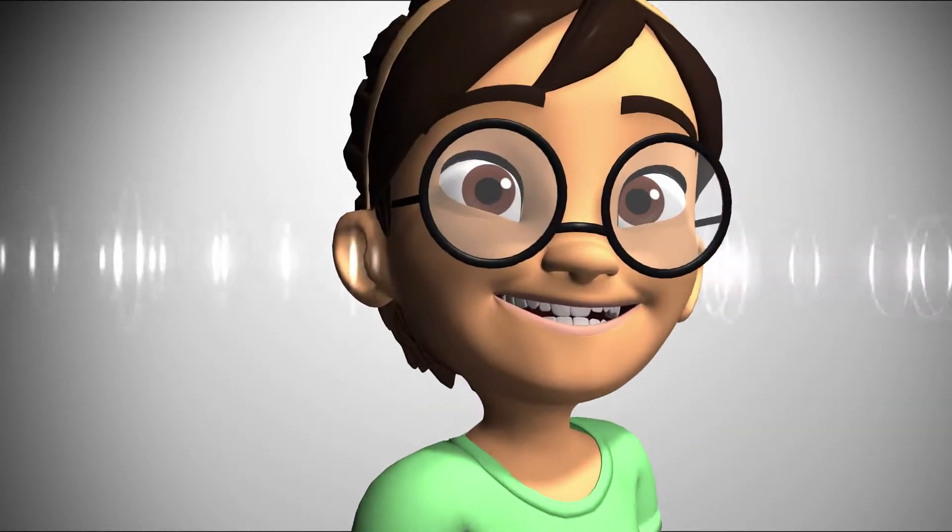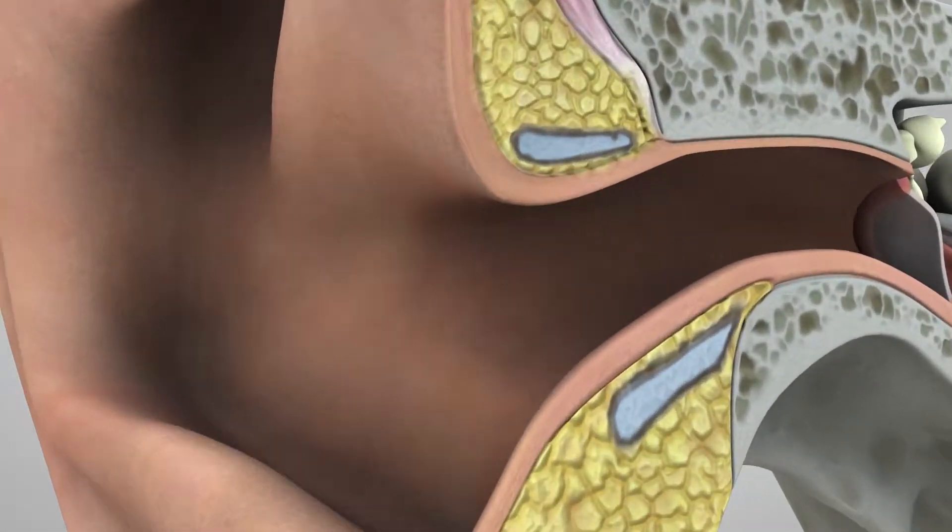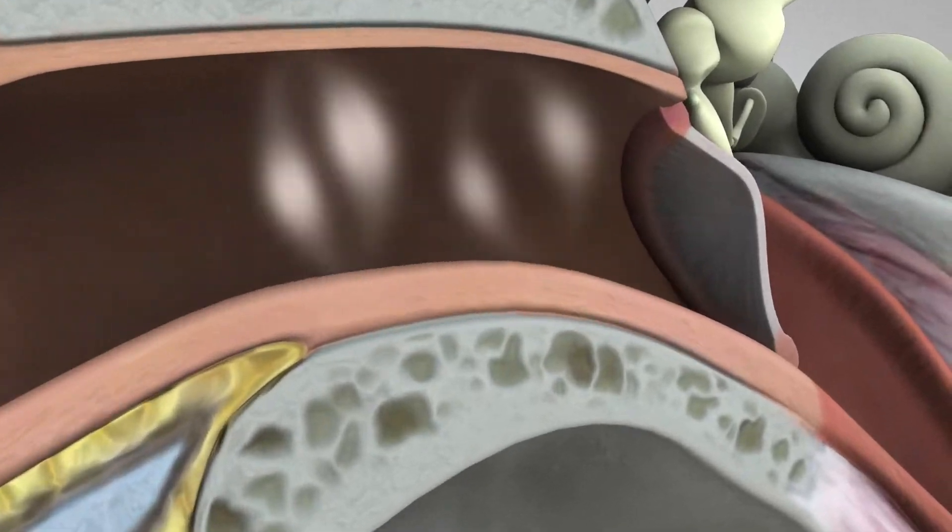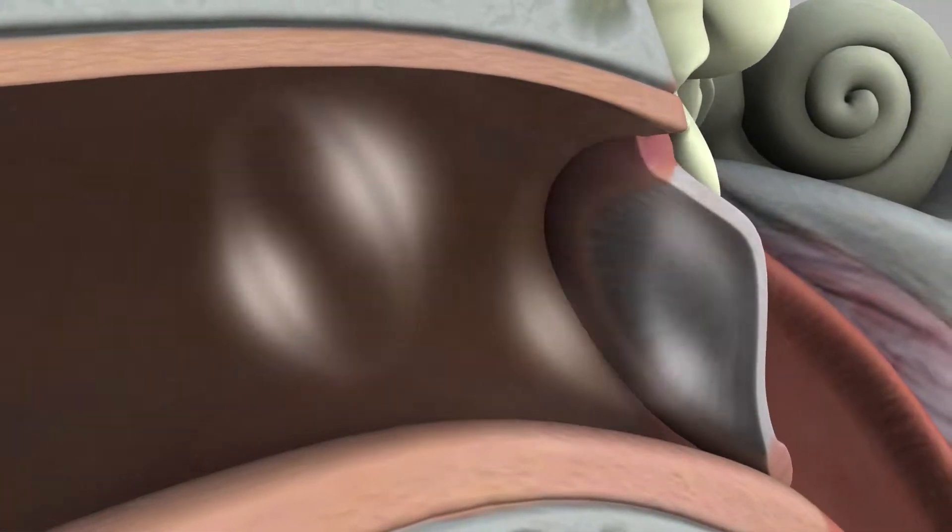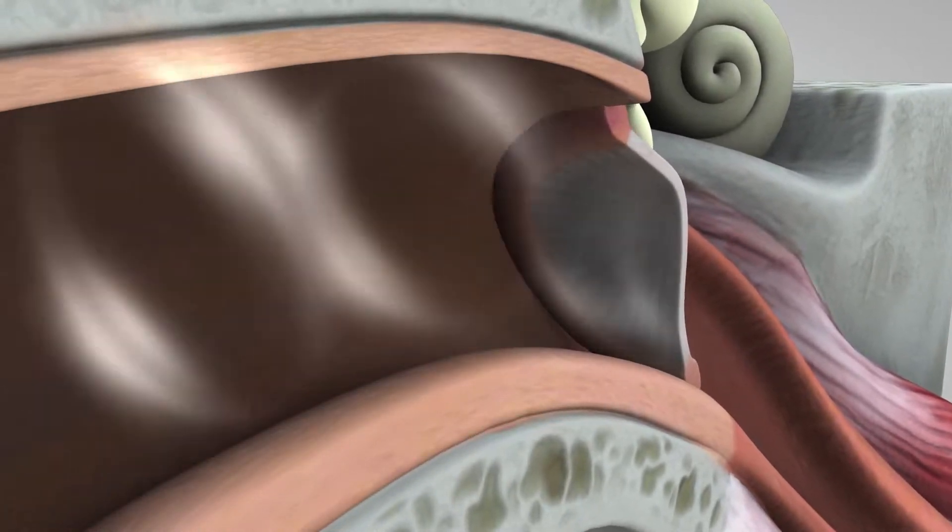The outer ear catches the waves, which then travel through a narrow passageway called the ear canal. The sound waves reach the eardrum, which is a membrane roughly half the size of a dime. They make the eardrum vibrate.